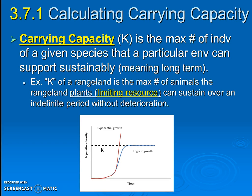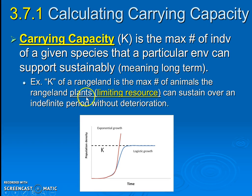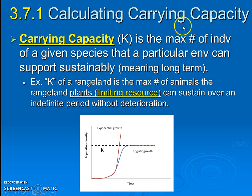Let's go over an example. The carrying capacity of a rangeland where cattle are kept is the maximum number of cattle or animals that the rangeland — picture a field of cows — the plants, the limiting resource, can sustain over an indefinite period without deterioration. So carrying capacity is the amount of creatures that whatever limiting resource can sustain without depleting over time.